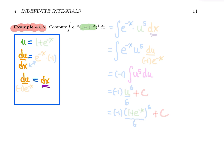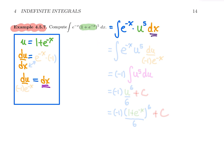Let's try it. Use u equals one plus e to the power minus x. The integral becomes e to the minus x times u to the power five times dx. To find dx, go back and differentiate: the derivative of one is zero, and the derivative of e to the power minus x requires a mini chain rule — giving e to the minus x times the derivative of minus x, which is minus one. So we have du equals minus e to the minus x dx. Swapping gives dx equals du over minus one times e to the minus x.